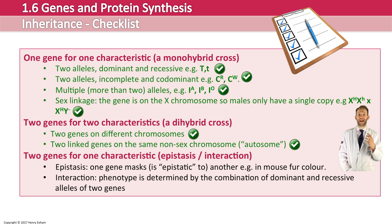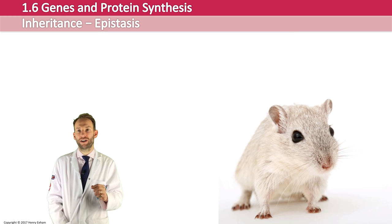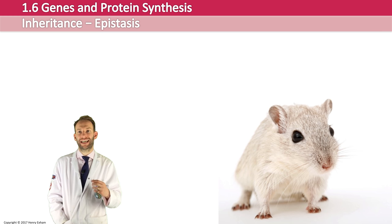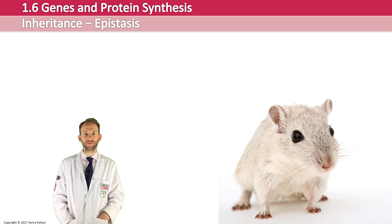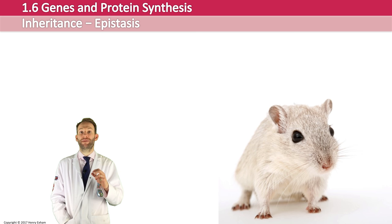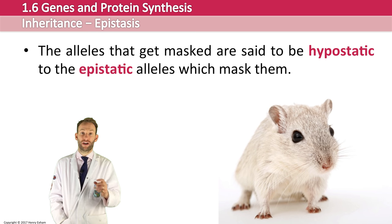The first example we're going to look at is something called epistasis. Epistasis is where one gene masks or interferes with another gene. The word comes from Greek roots meaning 'standing upon', so one gene sort of masks or blocks another gene. The alleles that get masked are said to be hypostatic to the epistatic alleles which mask them.